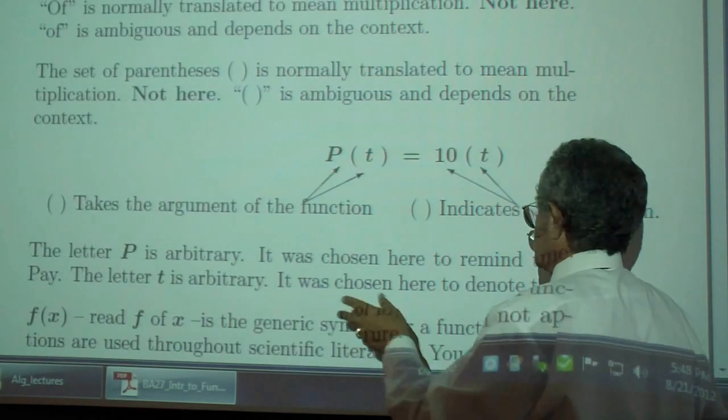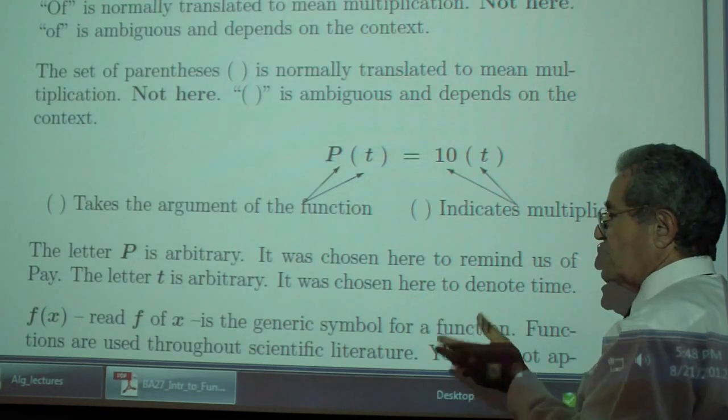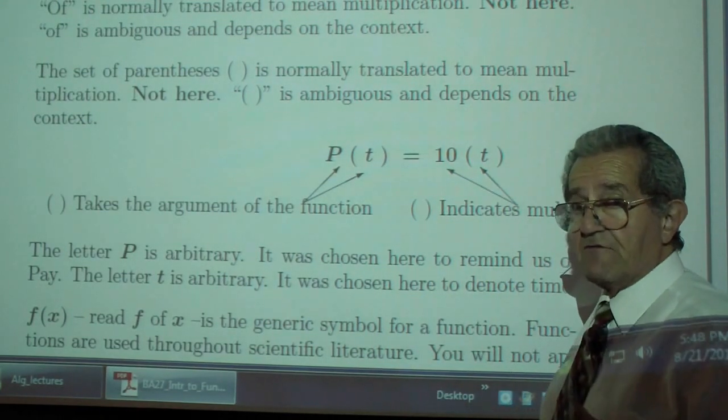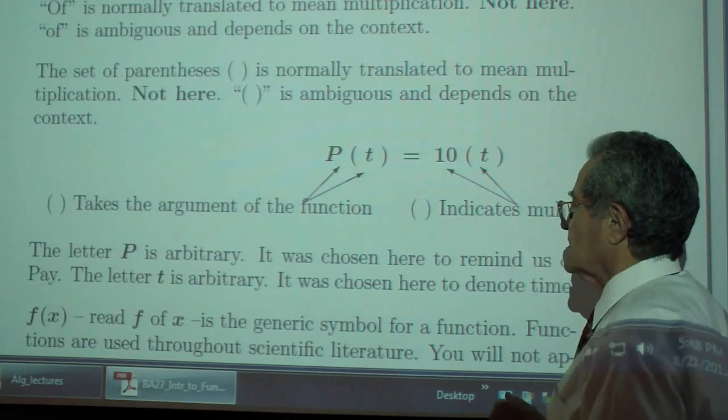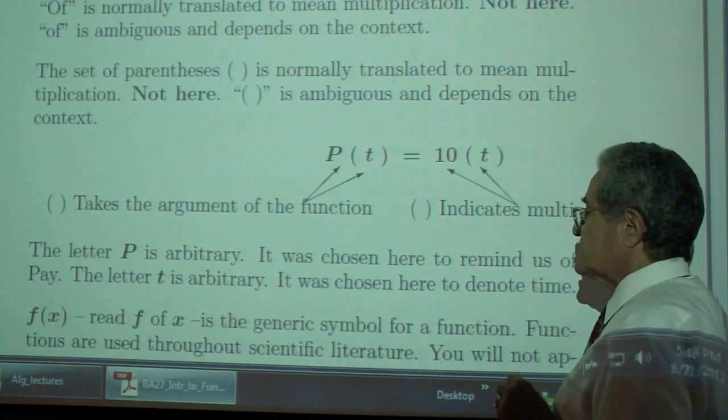The letter P is arbitrary. It is chosen here to remind us of pay. Normally, it is F of something. F for function. The letter T is arbitrary. It is also represented to denote time.